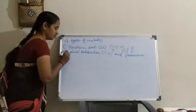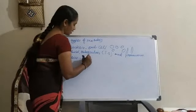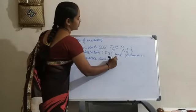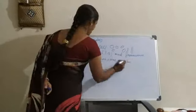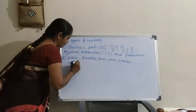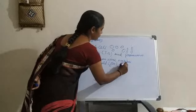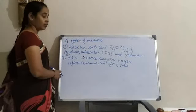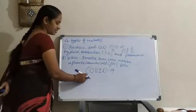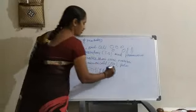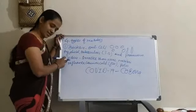The second type of microbe is a virus. Viruses are smaller than other microbes. These cause diseases like influenza, common cold, flu, and polio. And nowadays the whole world is suffering from a disease called COVID-19, which is caused by a virus called Corona. Corona is a type of virus and it is very harmful.